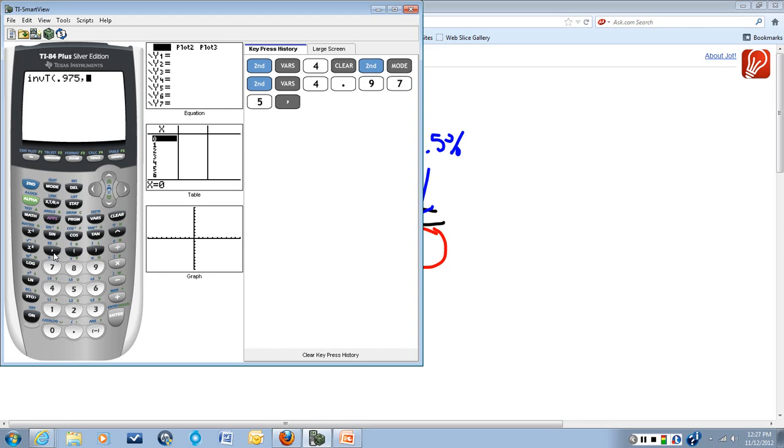The other piece of information that the calculator needs is the degrees of freedom on the t-curve that we're looking at. Remember, the degrees of freedom are n minus 1. Our sample size n is 16 in this case, so our degrees of freedom are 15.